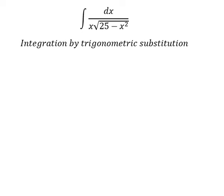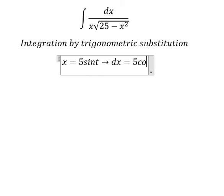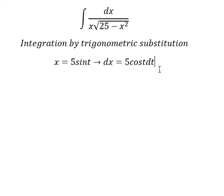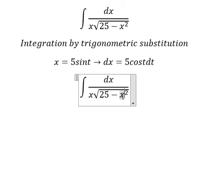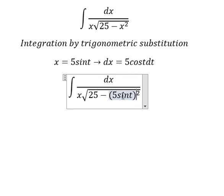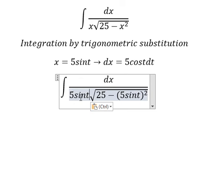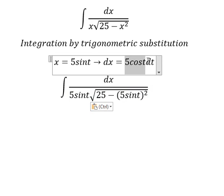So I will put x equal to 5 sine t, dx equal to 5 cosine t dt. After we do the derivative, we put this one in here and here. The x we change for this one.